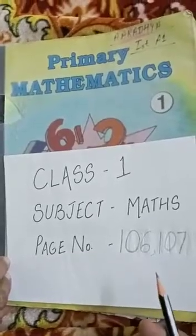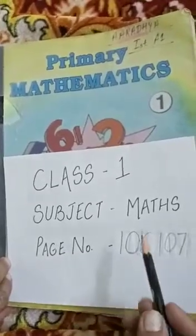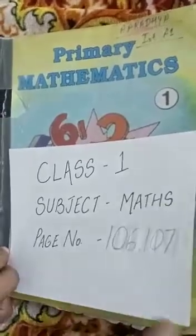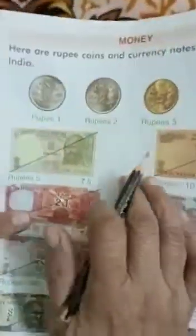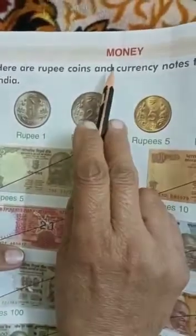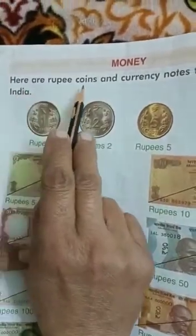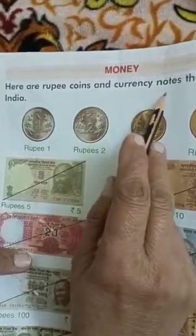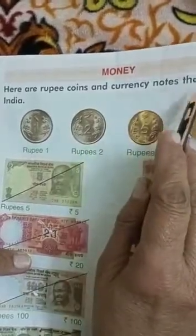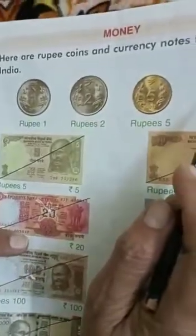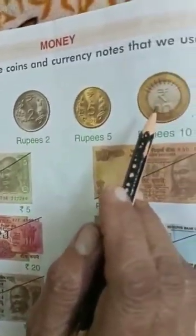Good morning students. Take out your math book, page 106-107. The name of the chapter is Money. Here are rupee coins and currency notes that we use in India. There are some coins and notes which we use in India.